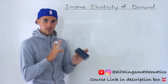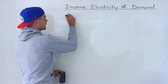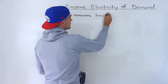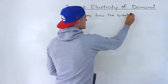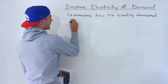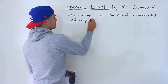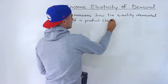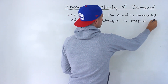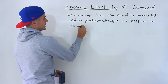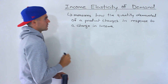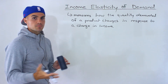The income elasticity of demand is going to be looking at one product. Basically, what it does is it measures how the quantity demanded of a product changes in response to a change in income.